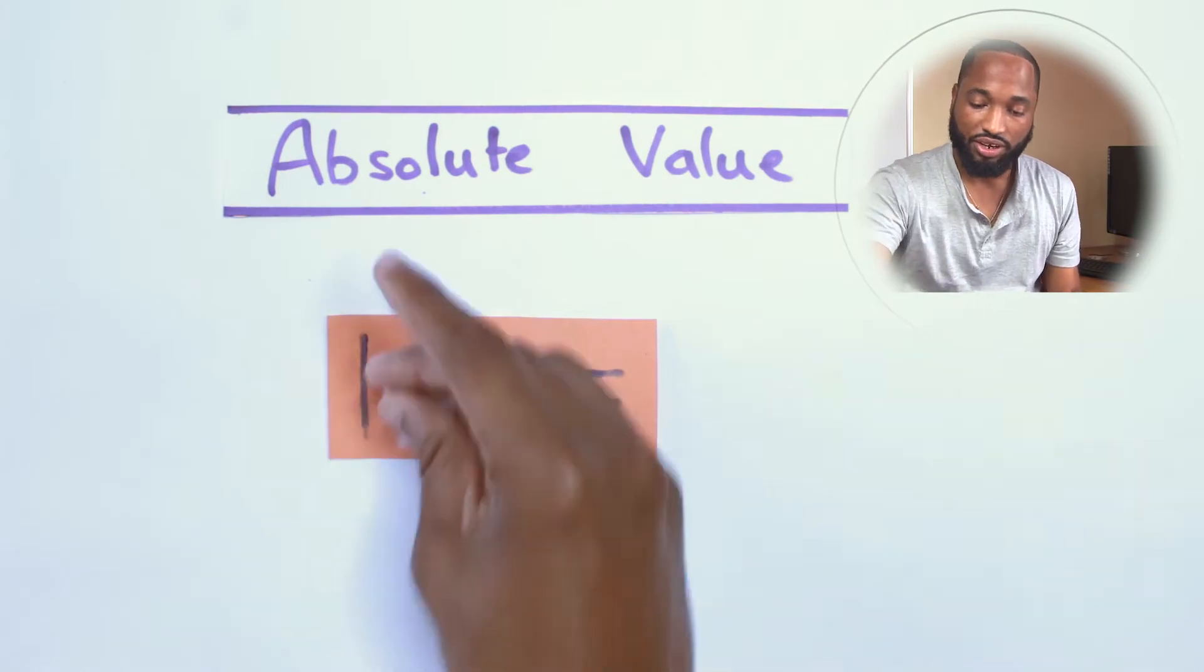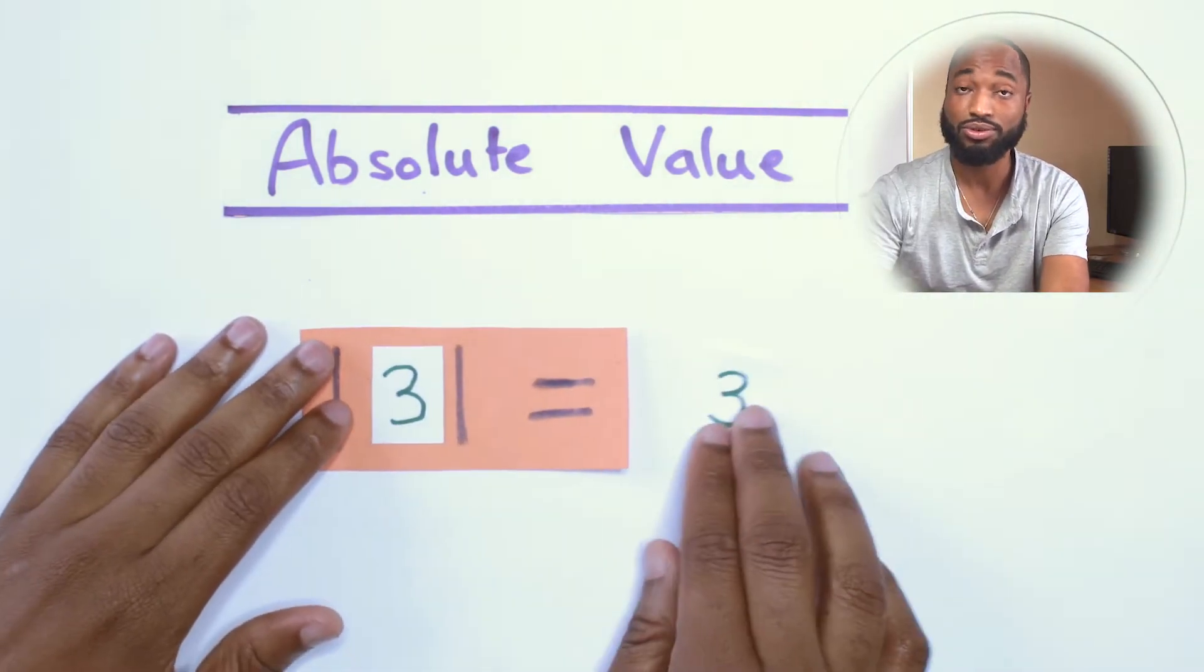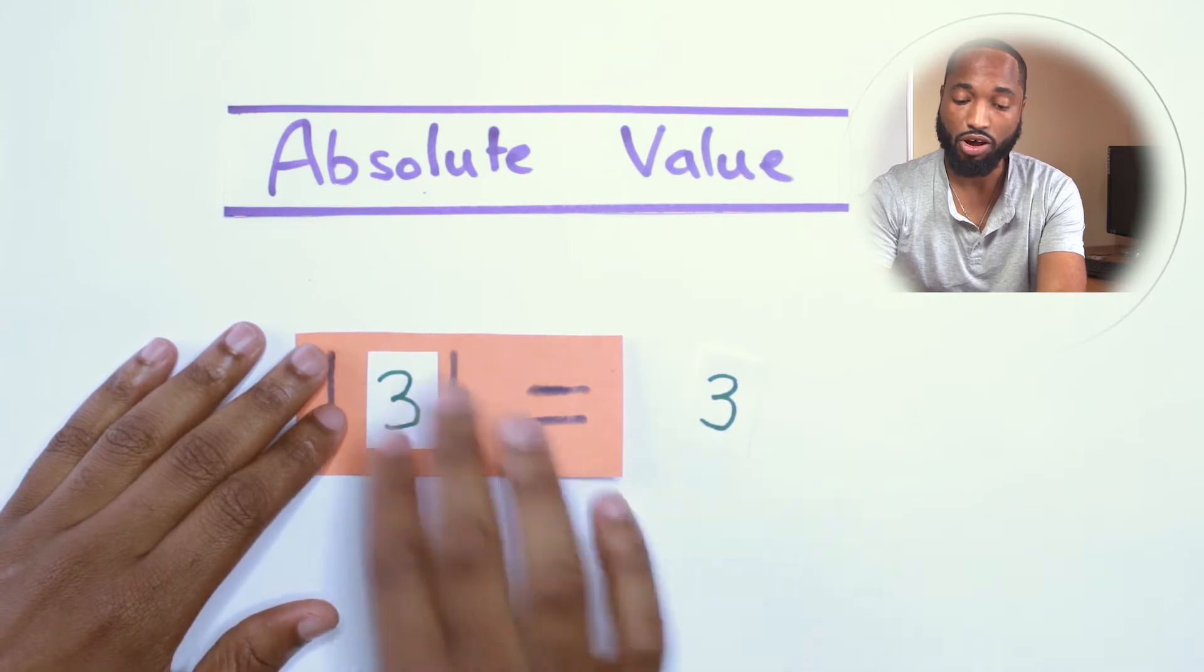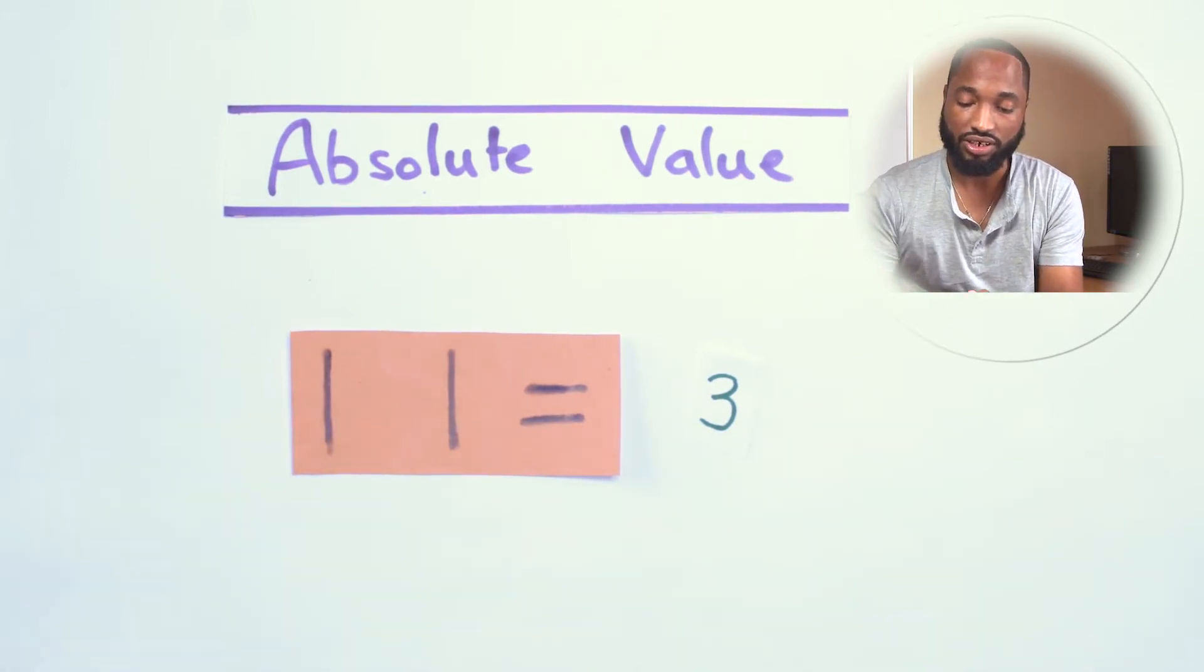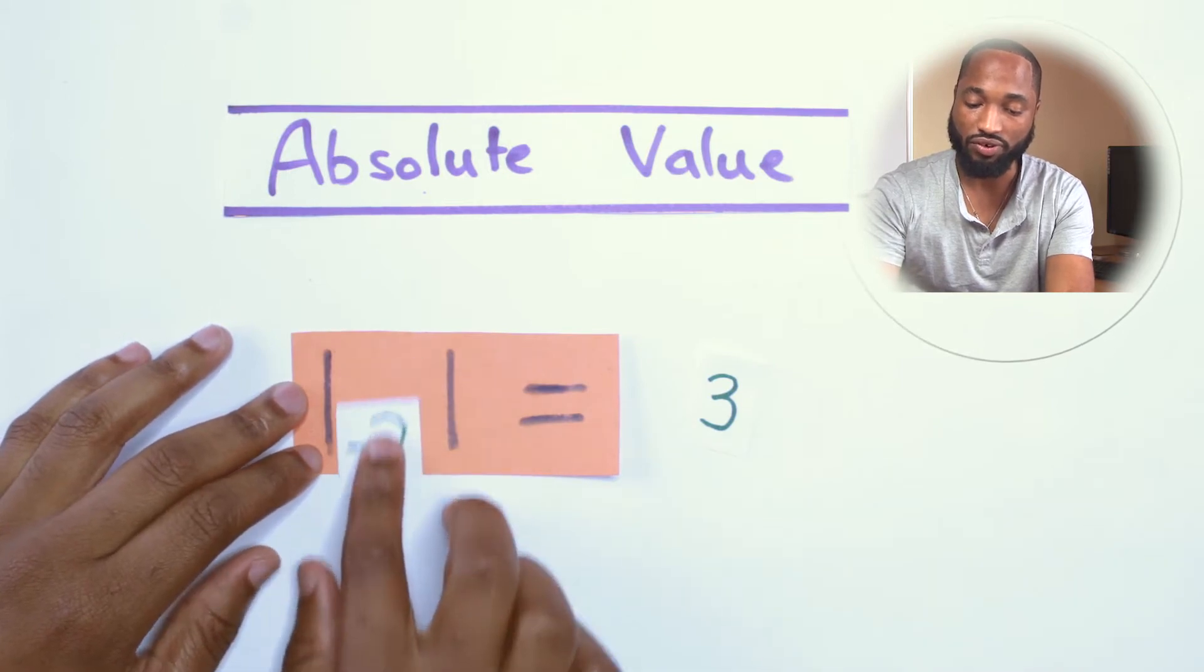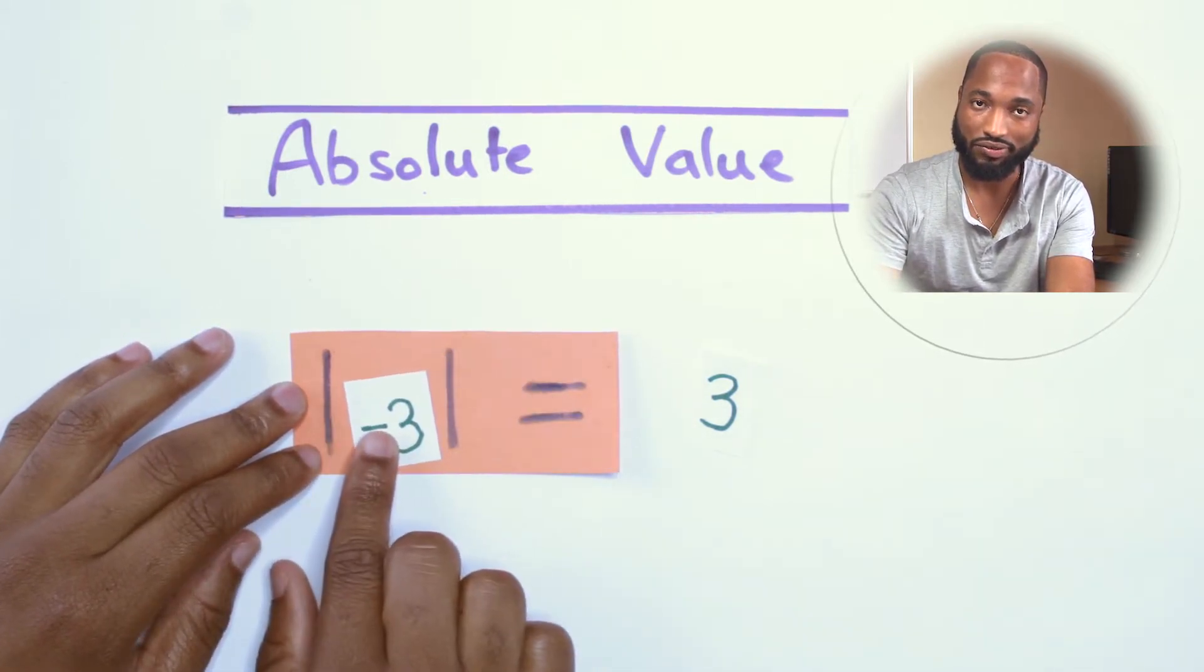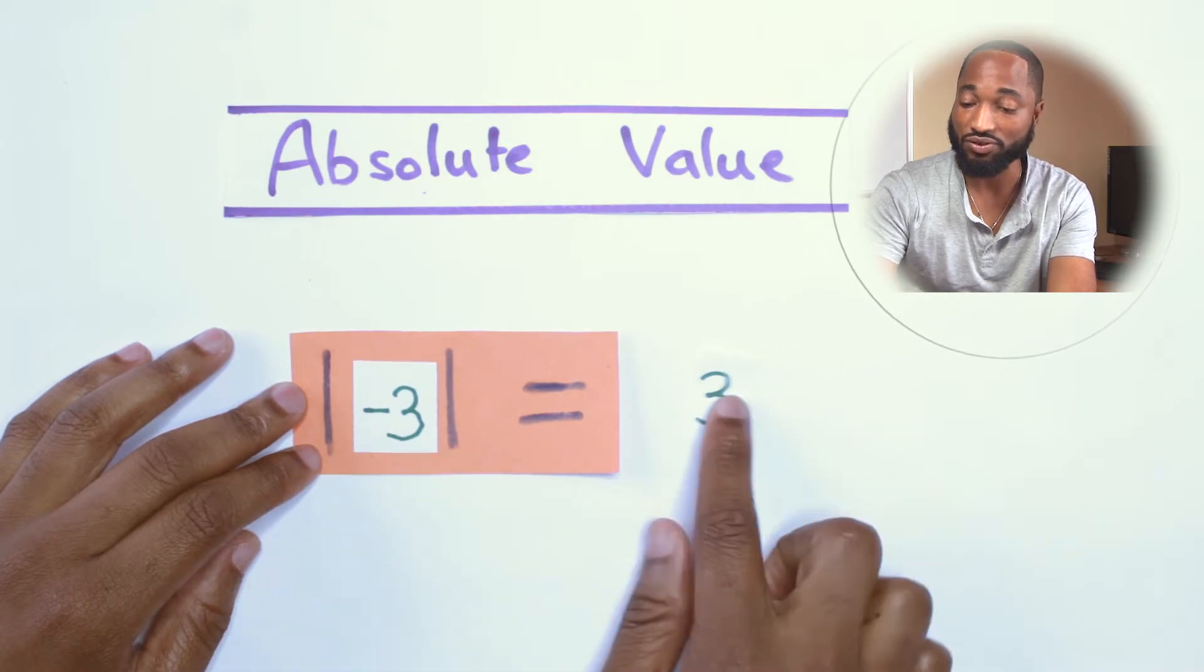If I put 3 in here, you know the absolute value of 3 is 3. How about if I put negative 3 inside there? What is the absolute value for negative 3? The absolute value for negative 3 is still 3.